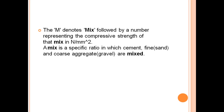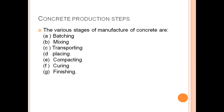M stands for mix, and the number represents the compressive strength of that mix in Newton per mm². A mix is a specific ratio in which cement, sand, and coarse aggregate are mixed. The concrete production steps are: batching, mixing, transporting, placing, compacting, curing, and finishing.